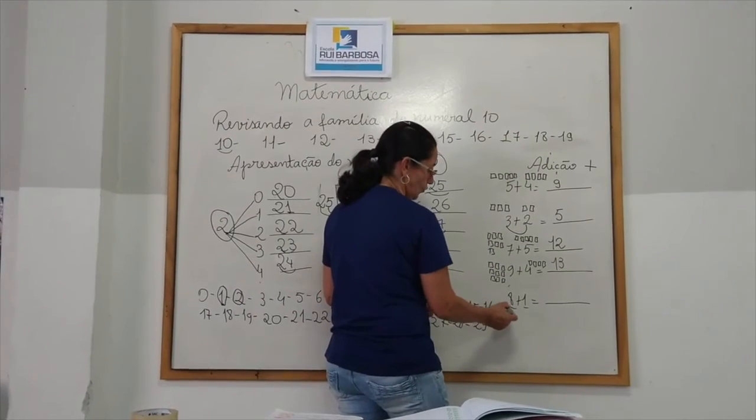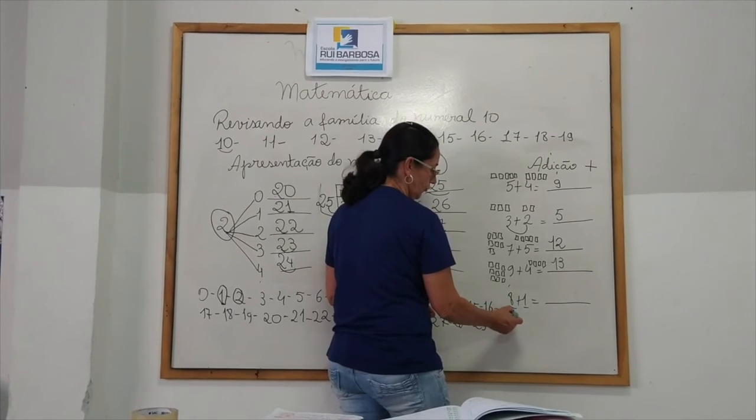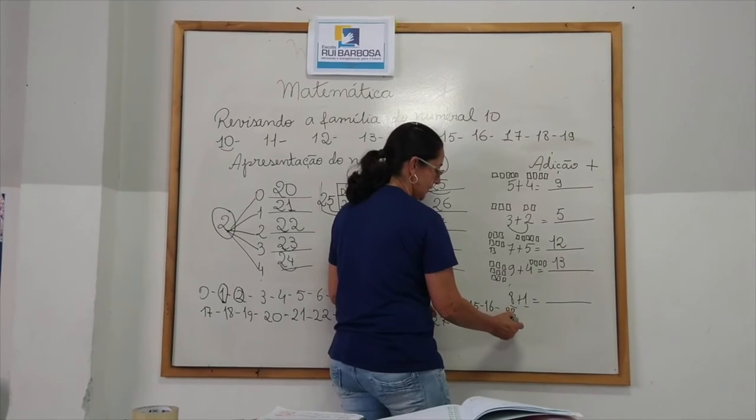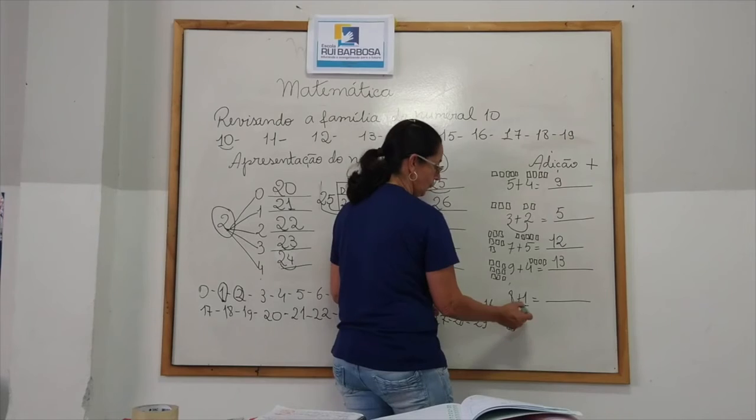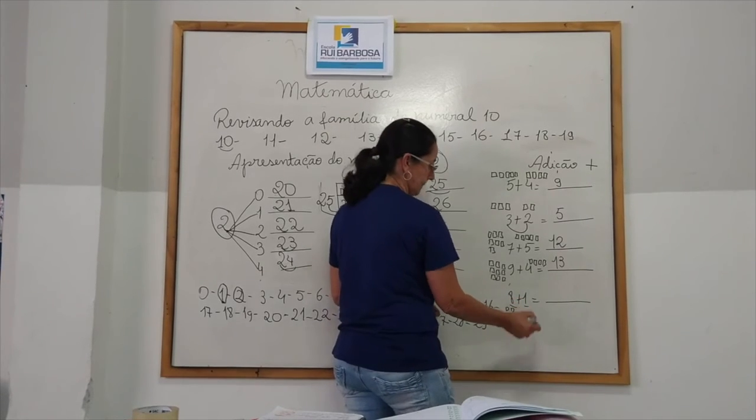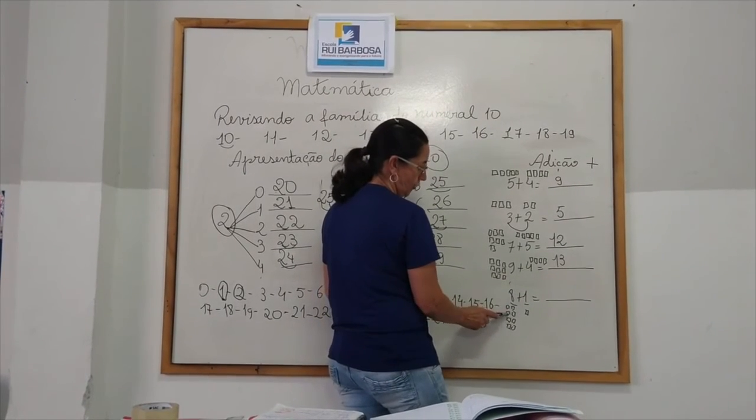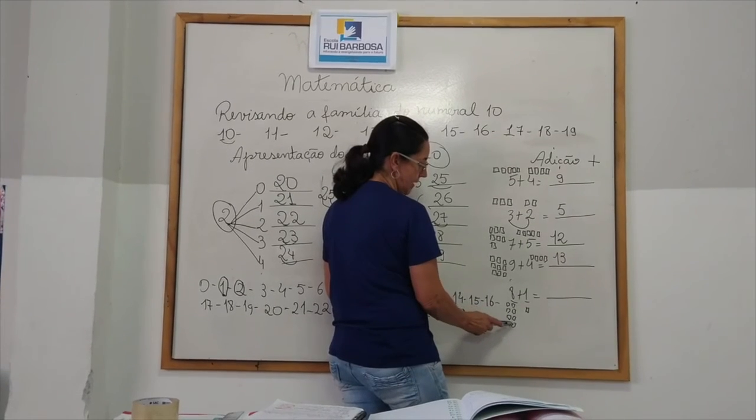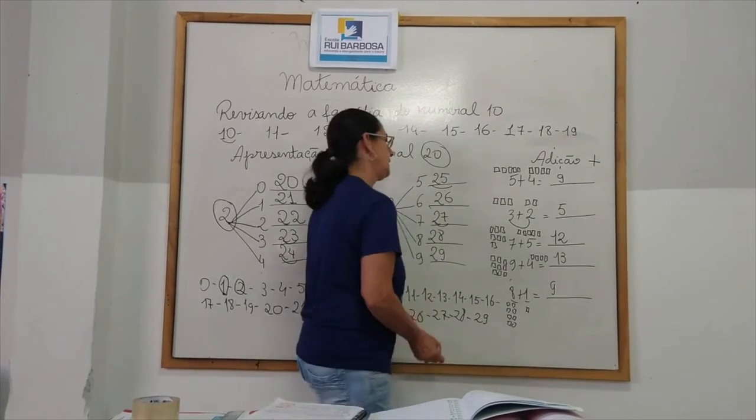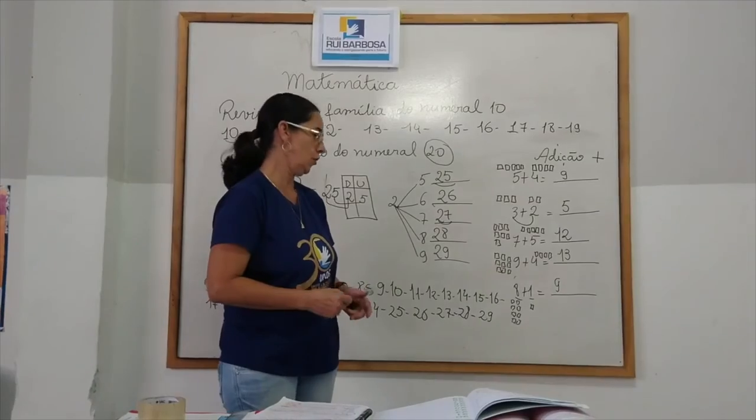8 mais 1. 1, 2, 3, 4, 5, 6, 7, 8. 8 mais 1. 8 mais 1 é igual a 1, 2, 3, 4, 5, 6, 7, 8, 9. 8 mais 1 é igual a 9. Ok?